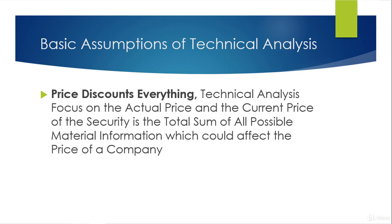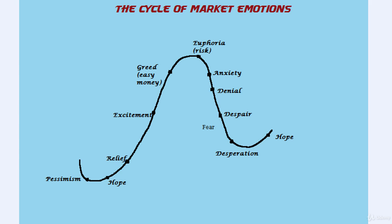Technical analysis is based on three basic assumptions. The first one is that price discounts everything. Technical analysis focuses on the actual price, and the current price of the security is a total sum of all the possible material information which could affect the price of a company. The market is driven by mass psychology and human emotions, reflected in the prices of securities. Two main human emotions are fear and greed that affect price movements to a great extent. These emotions respond rapidly to big events, so we should buy when a stock is making bottoms and fear is at its extreme, and sell when greed is at its extreme and prices are at highs.